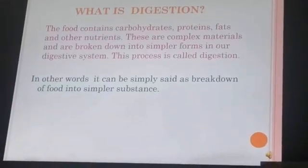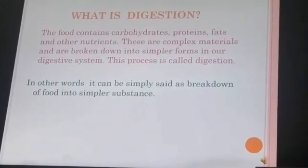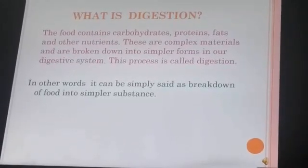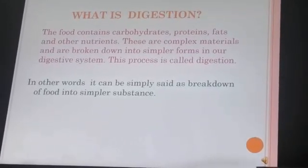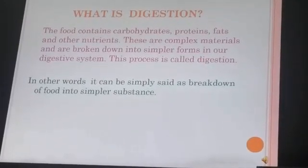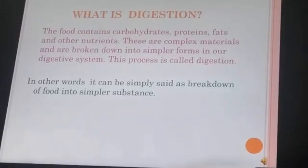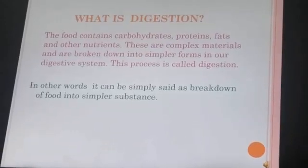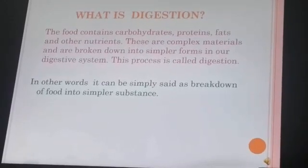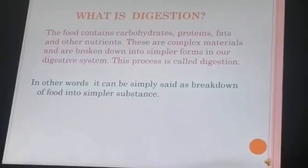Before starting about the digestive system, I want to explain what digestion is. It is a process of breaking down complex food material into simpler form. All food items that we eat are in complex form, like chapati, vegetable, rice, etc. When we take these food items in our mouth, the tongue and teeth help to churn, mix, and swallow them.